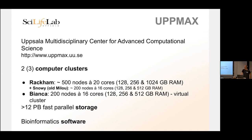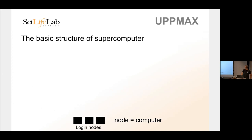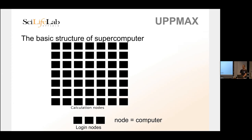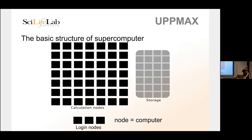The basic structure of one of these cluster computers is that when you first connect, you arrive at something called login nodes. It usually says Rackham1, Rackham2, or Rackham3 — those are the three login nodes at UPPMAX. All users connecting to UPPMAX go through one of these computers. Then you use the salloc command to say you want your own compute node, check which one you got with the sq command, and then SSH again to that specific node. Those are the calculation nodes — identical computers. It shouldn't matter which one you get. They all have access to the same network storage, which is not on the computers themselves.